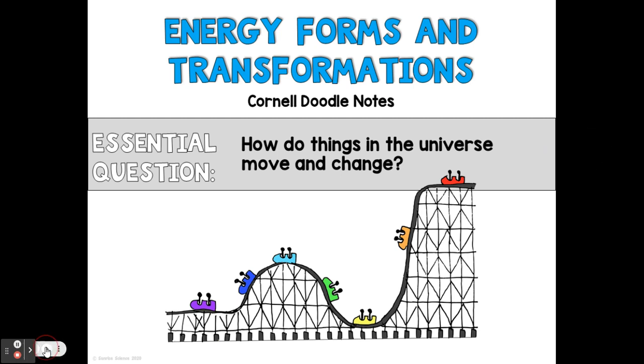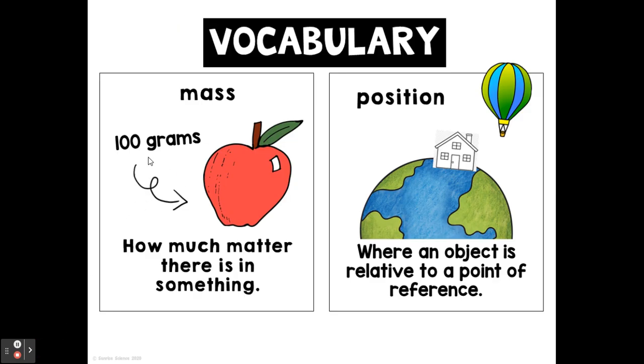If you notice, right next to it over on this side of the question on your paper, there's an apple and a globe. And the apple should have the little arrow, and the globe will have the little house and the balloon. These are some vocabulary words that you need to remember. The word 'mass'—you're going to write that above the apple. 100 grams—that's how many grams of mass the apple has.